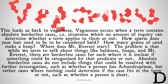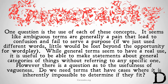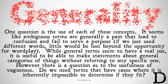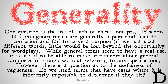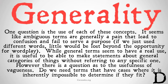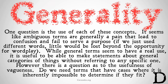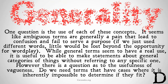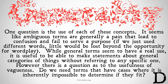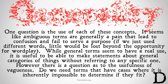Shortness has absolute borderline cases where there's nothing we could do to determine if that word would apply. One question is the use of each of these concepts. Ambiguous terms are generally a pain that lead to confusion and fail to serve a purpose — if we just used different words, little would be lost beyond the opportunity for fun wordplay. General terms, on the other hand, seem to have a real use: it's useful to make statements about general categories of things without referring to any specific one. However, there is a question as to the usefulness of vagueness.